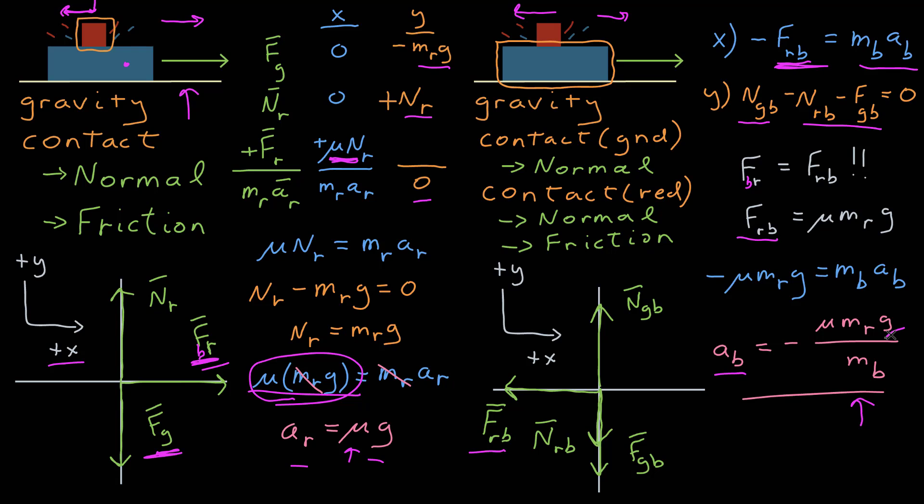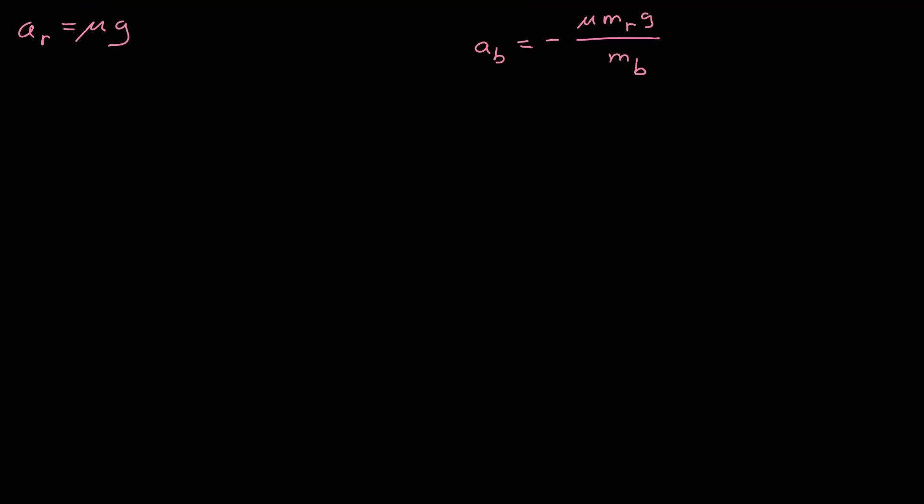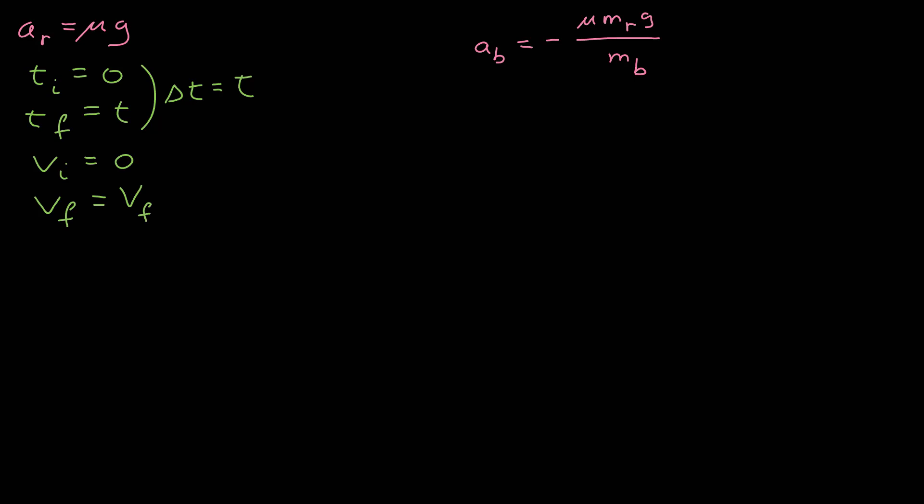I now have two accelerations for both blocks. Maybe some quick kinematics will get me the right answer. Since the accelerations are constant, I choose two points in time: initial when the red block hit the blue, and final when red comes to rest on blue. I'll call the initial and final times zero and t, so the time interval is just t.